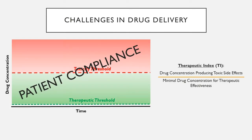When considering the drug release profile within the body, engineers face challenges in designing the most ideal drug delivery vehicle. Two key considerations are the therapeutic threshold — the minimum drug concentration needed for a therapeutic effect — and the toxicity threshold, which is the concentration at which the patient begins showing adverse side effects. In between these two thresholds lies the therapeutic window, and you want drug concentration to remain within it.